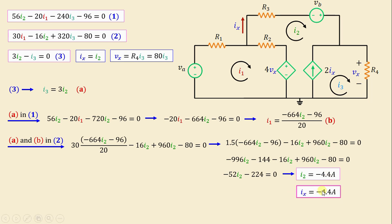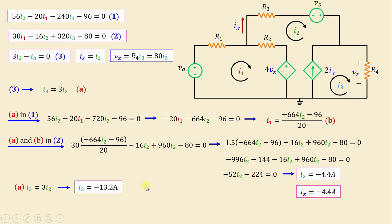Since ix equals i2, we have ix = −4.4 amps. From Equation A, i3 = 3·i2, so i3 = −13.2 amps. By Ohm's law, vx = R4·i3; substituting R4 and i3 gives vx = −1.05 kilovolts.